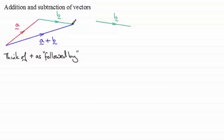You might like to think of it as moving from one position to another. I go from this point to this point and then from this point to this point. So therefore I could have taken the shortcut and gone from here directly to here, the vector a plus b.